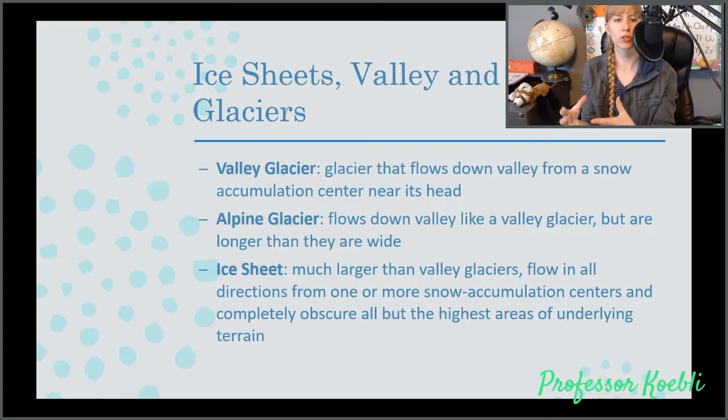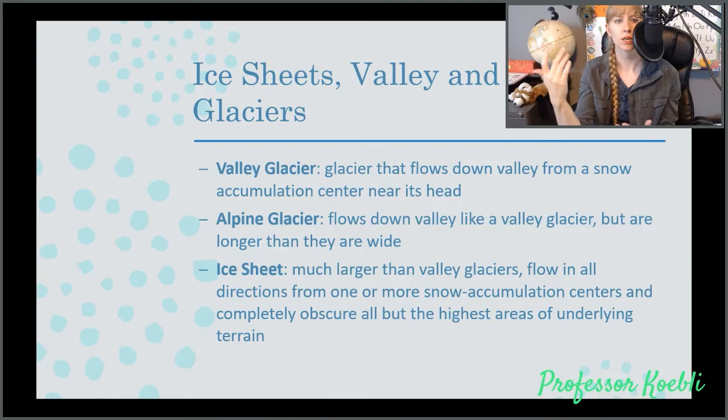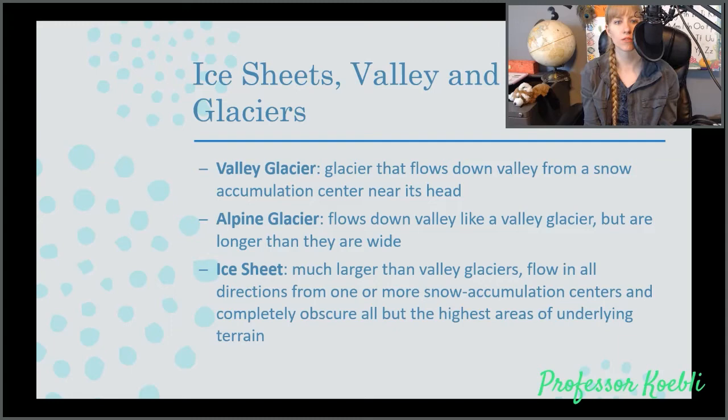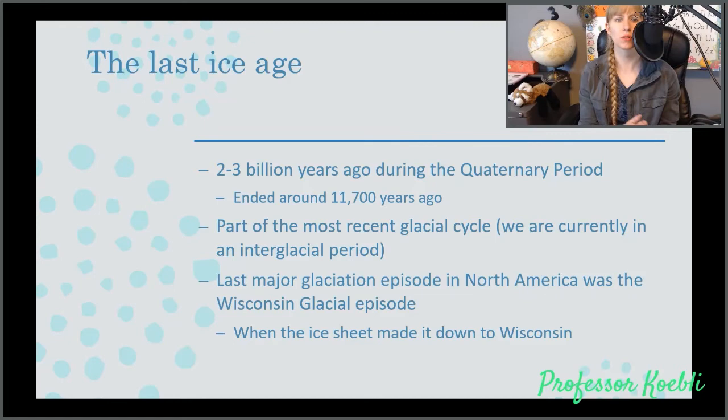A valley glacier is a glacier that flows down a valley from a snow accumulation center near the head or the start of the glacier. An alpine glacier also flows down a valley like a valley glacier, but they are longer than they are wide. An ice sheet is much larger than both of these glaciers. They flow in all directions from one or more snow accumulation centers and completely obscure all but the highest areas of underlying terrain.